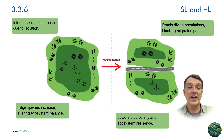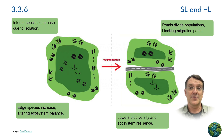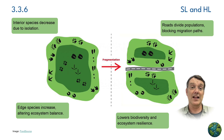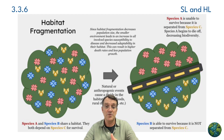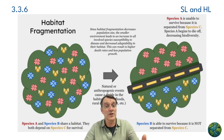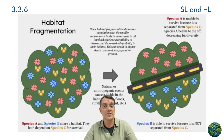Habitat fragmentation poses one of the greatest threats to conservation success. When habitats are divided, interior spaces decrease due to isolation, edge species increase and alter ecosystem balance, roads divide populations and block migration paths, and overall biodiversity and ecosystem resilience decline. When natural or human-led events cause a divide in the habitat, some species may become unable to survive because they've been separated from species they depend on. This diminishes biodiversity and ecosystem function and makes remaining species more vulnerable to disease and environmental change.